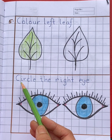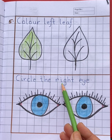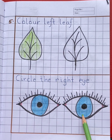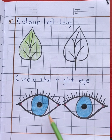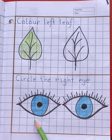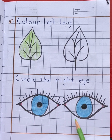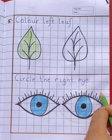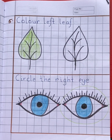Next question is: Circle the right eye. Now here you can see two eyes. Now tell me children, which eye is on the right side — first eye or second eye? Second eye is on the right side. So circle the right eye. Left, right.